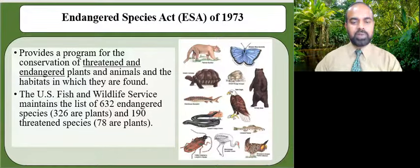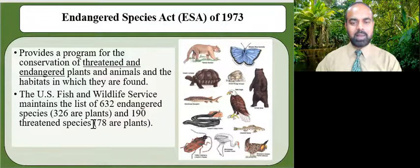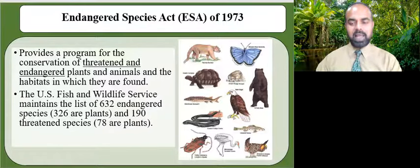The U.S. Fish and Wildlife Service, or FWS, maintains a worldwide list of endangered species. Species in this list include birds, insects, fish, reptiles, mammals, as well as crustaceans, flowers, grasses, and trees. This list has 632 endangered species, among them 326 are plants, and 190 threatened species, among them 78 are plants. This law requires federal agencies in consultation with FWS and/or NOAA Fisheries Service to ensure that actions they authorize, fund, or carry out are not likely to jeopardize the continued existence of any listed species or result in the destruction or adverse modification of designated critical habitats of such species.